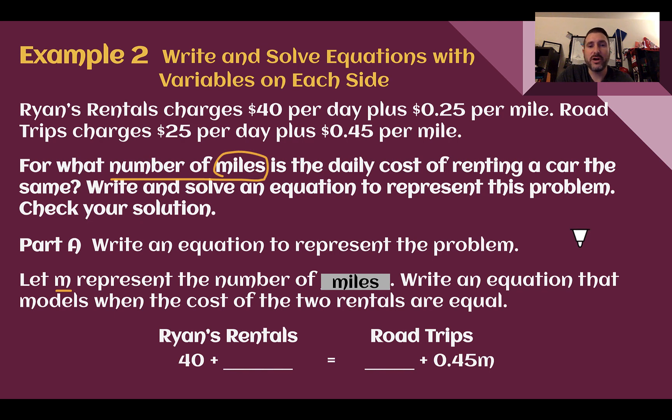Write an equation for M miles when they are equal. So Ryan's rentals is 40 per day. That's not talking about miles, so it doesn't have the variable. 25 cents per mile. So 0.25M.